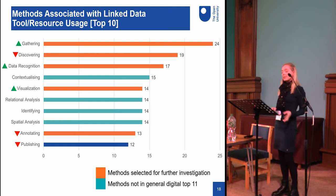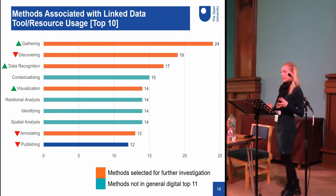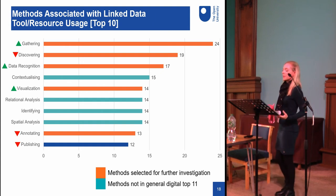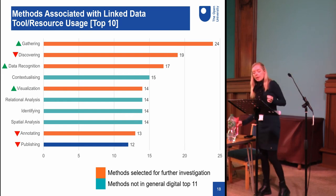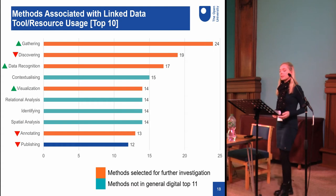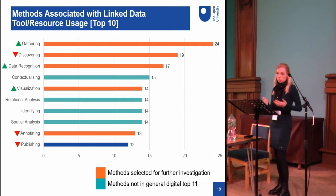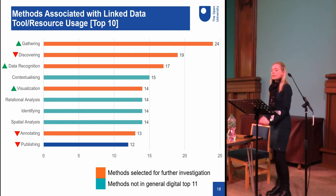The first thing we noticed is that most of the generic methods associated with digital research more generally have disappeared, replaced by more specialist methods and terms such as relational and spatial analysis. Looking at the methods selected for further investigation from the previous slide — shown in orange — most are now near the top of the list. Discovering, which was the most frequent method for general digital research, is now only the second most frequent, with gathering taking the top spot for linked data usage. These results indicate that linked data resources tend to be used for more specialist research activities, yet the majority of top research activities for linked data are also among the top methods for general digital tool use, meaning findings could produce recommendations to improve linked data resource usability.